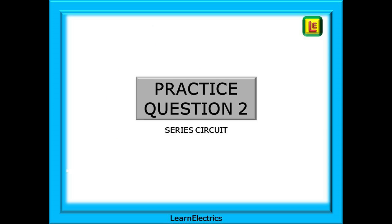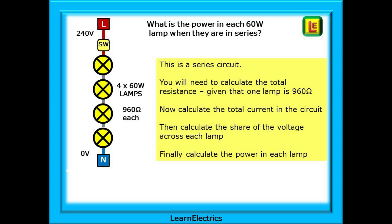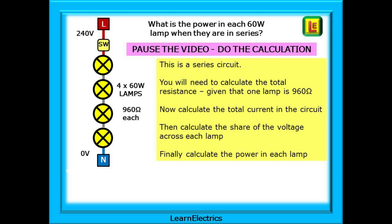Now on to practice question number two. This is a little harder and will require some working out. Take your time with it and write down your calculations as you go along. What is the power in each 60 watt lamp when they are in series? There are four lamps in series, but this is not a problem. Just follow the method that we used before. This is a series circuit, so we will need to calculate the total circuit resistance, and we know that one lamp is 960 ohms. Now calculate the total current in the circuit using Ohm's law as we already have the voltage. Then calculate the share of the voltage across each lamp again using Ohm's law. Finally, we can calculate the power in each lamp using the power law triangle.